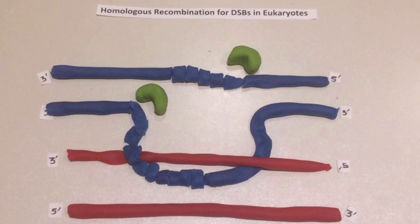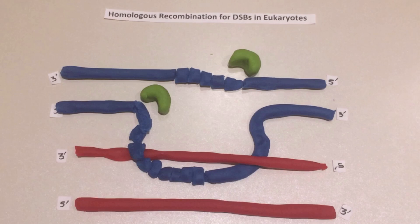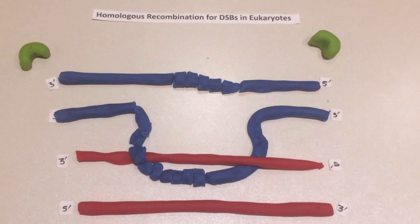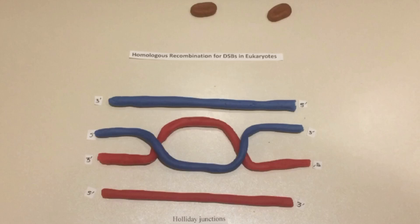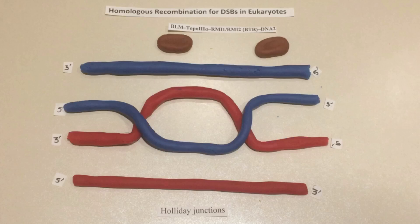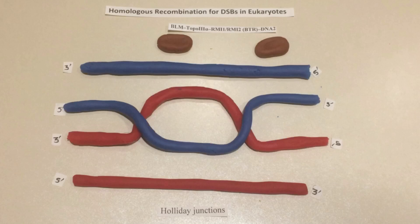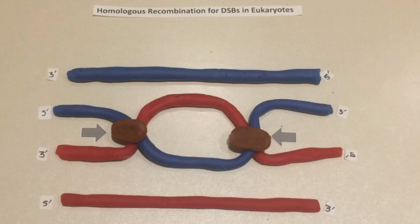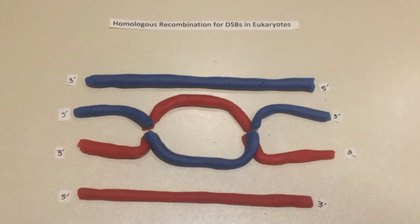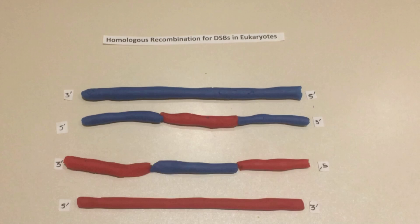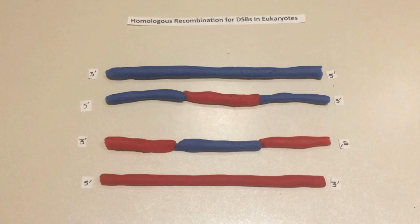BLM-TOPO3-alpha, RMI1, RMI2, and DNA2 regulate homologous recombination in favor of non-crossover formation by way of the dissolution of the double Holliday junction. The two Holliday junctions are cut on the crossing strands along the horizontal arrowheads at both Holliday junctions. Only then chromosomes without crossover will be produced, and therefore the result of homologous recombination is non-crossover.